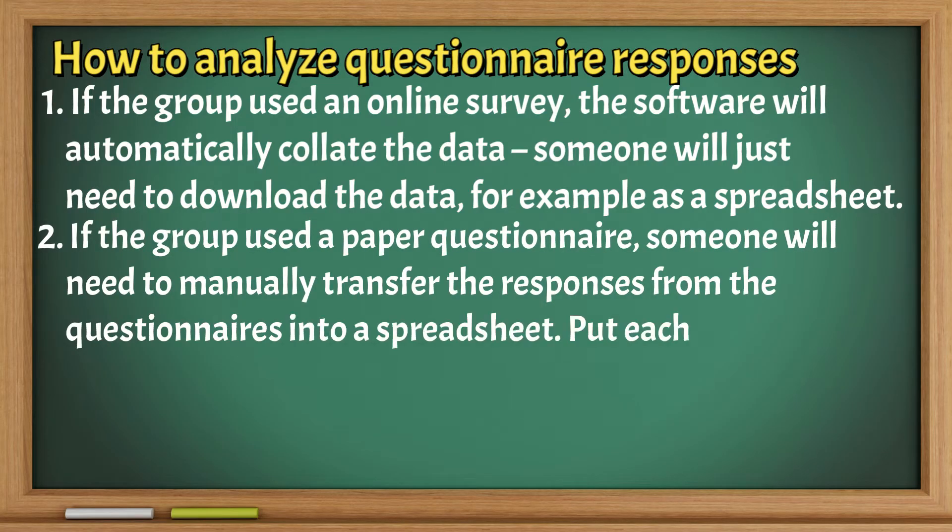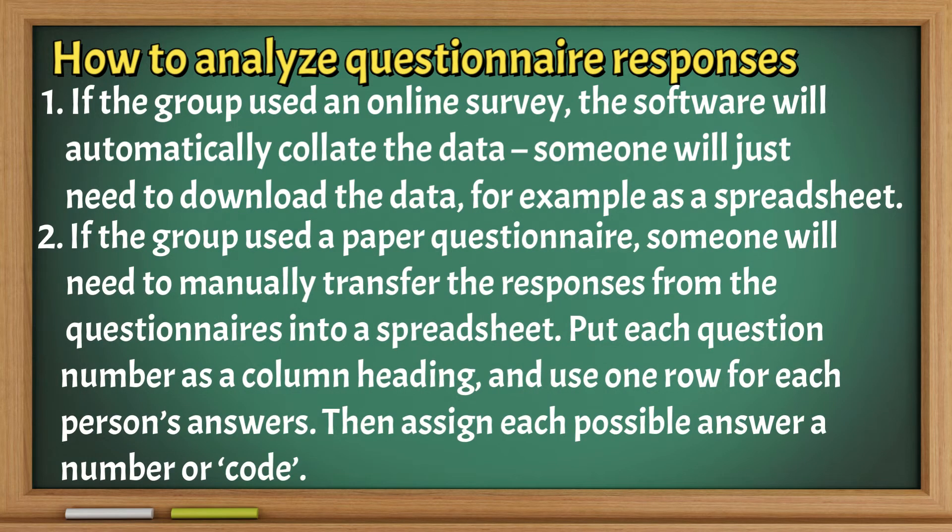If the group used a paper questionnaire, someone will need to manually transfer the responses from the questionnaires into a spreadsheet. Put each question number as a column heading and use one row for each person's answers. Then assign each possible answer a number or code.